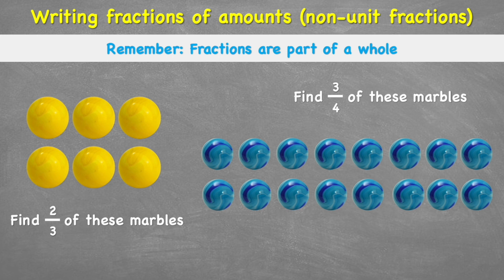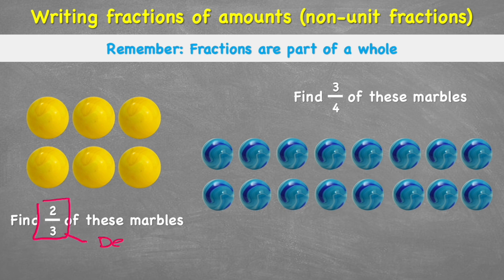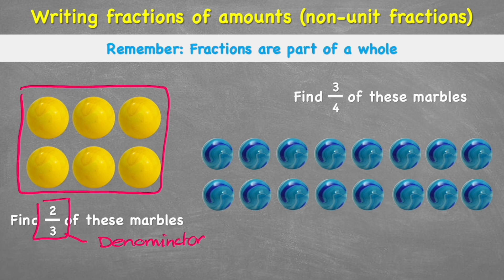Let's have a look at this first question. It says: find two-thirds of these marbles. We need to remember what our fraction stands for. The number on the bottom is what we call the denominator, and this tells us how many we need to split our whole — in this case, our whole amount of marbles — into. We can see we have groups of three because our denominator is three. And then the number on the top, we call this the numerator, and this tells us how many of those groups of three we need to add up to get our final answer.